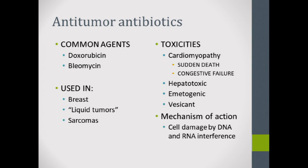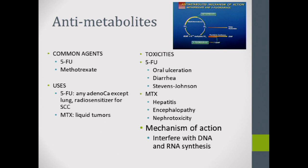Antitumor antibiotics such as doxorubicin and bleomycin — doxorubicin's classic association is cardiomyopathy, and it interferes with RNA. For antimetabolites like 5-FU and methotrexate: 5-FU is used broadly in adenocarcinomas and is a radiosensitizer for squamous cell cancers like anal cancer, as well as for adenocarcinomas like rectal cancer.